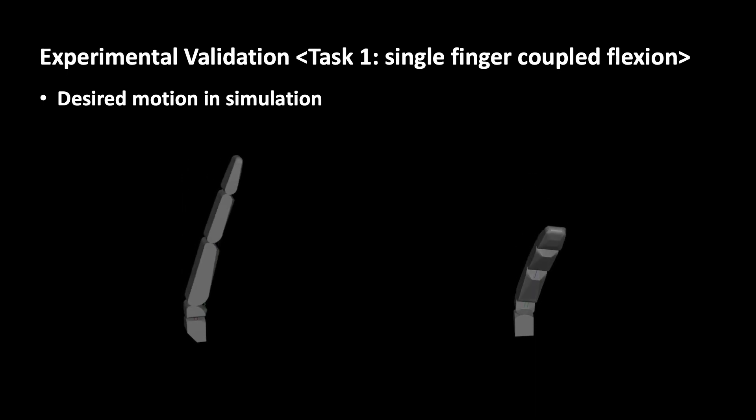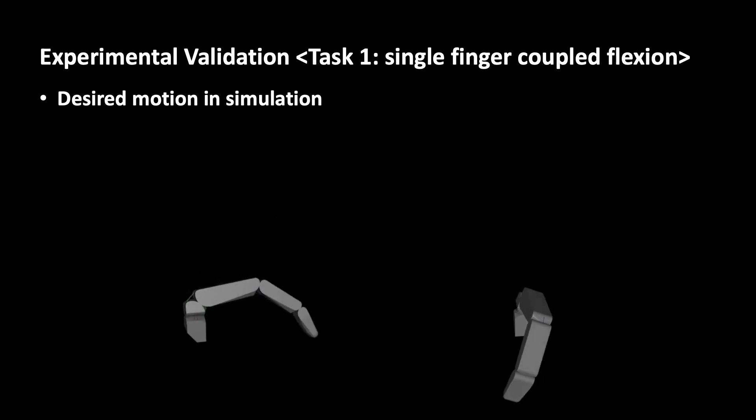We demonstrate our approach using two examples. Let's have a look at the first example. We record a single finger moving along a desired trajectory in simulation. We record specifically the tendon length profiles to generate composite pulleys.